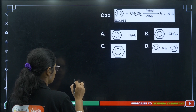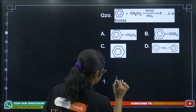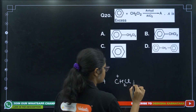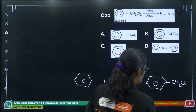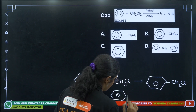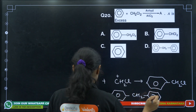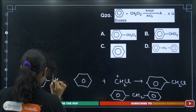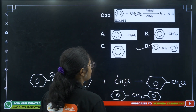Question 20: In the Friedel-Crafts reaction, the electrophile CH2Cl+ is first generated. This attacks the benzene ring to give an intermediate product. Since the reagent is in excess, it reacts again — another electrophile is generated and attacks the intermediate to give the final product, which is option number D.